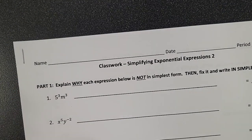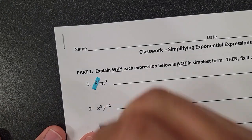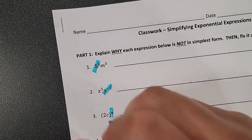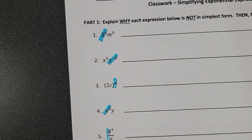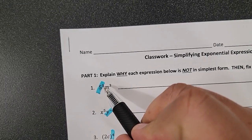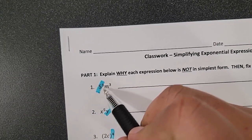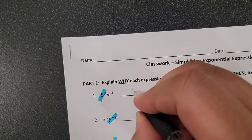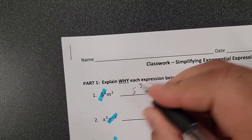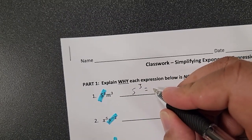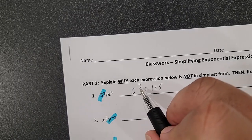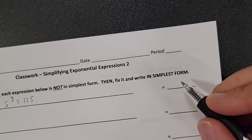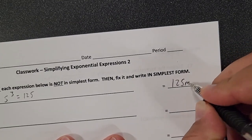In this handout it says explain why each expression below is not in simplest form and fix it. I'm going to highlight whatever is actually not in simplest form. So we have different situations and we're going to recognize each one. The first one is 5 to the third — this regular number we just need to go ahead and put it in the calculator. Five to the third equals 125, and M to the third stays as is. So the final answer is 125M to the third power.